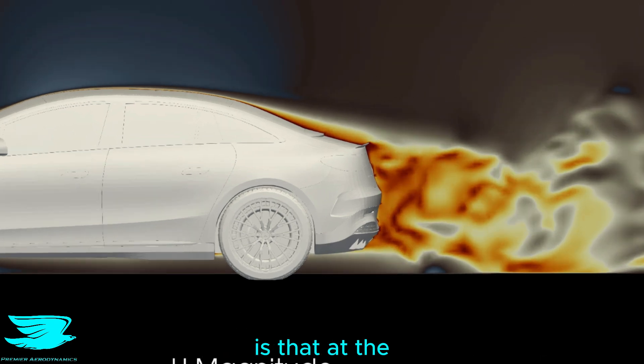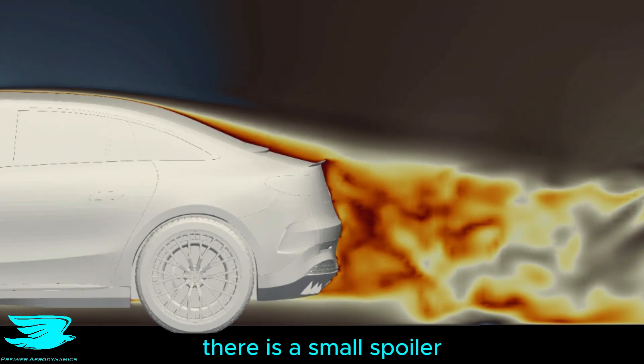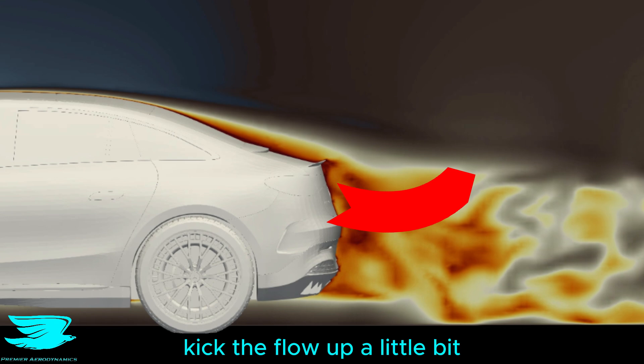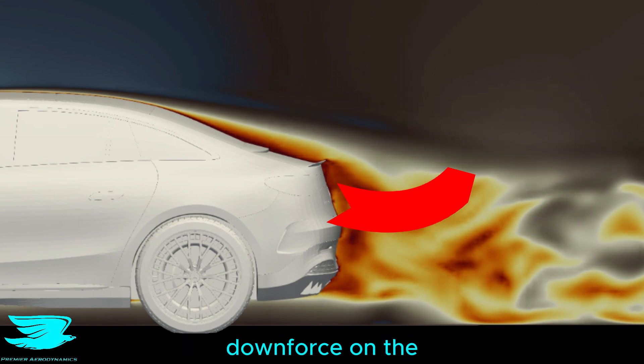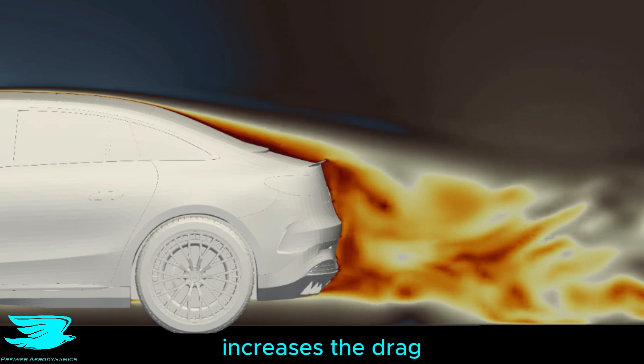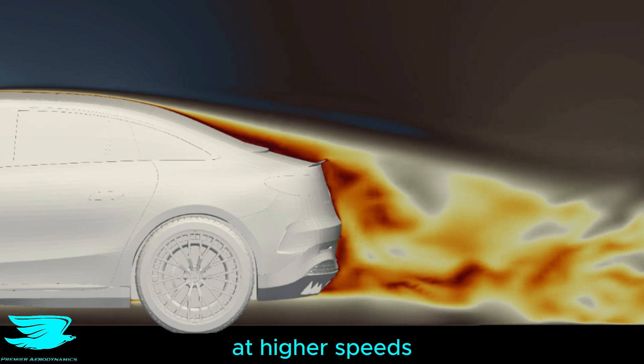Another important point is that at the top of the trunk, there is this small spoiler. It's not very big, but it's there to kick the flow up a little bit and increase the downforce on the rear wheels. Doing this actually increases the drag, but it's necessary to keep the car stable at higher speeds.